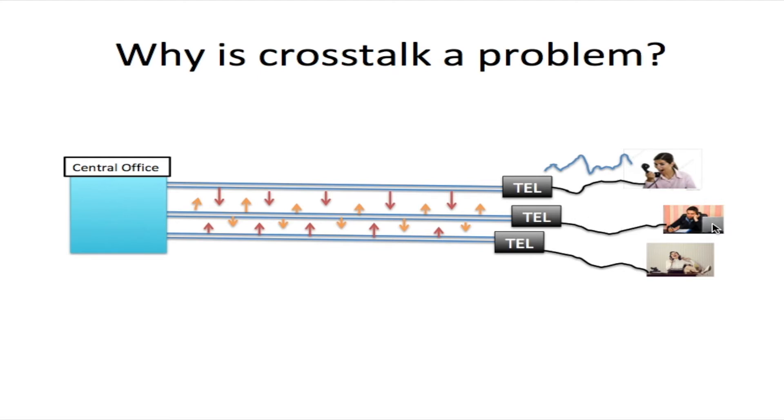This person here will be able to hear this person speak. The louder they speak, the louder the crosstalk gets. If this person at the bottom is speaking as well and they're speaking loud, they will be able to hear them. Or if this person is speaking loud, the person at the bottom would be able to hear them. So crosstalk is constantly crossing over from line to line as a result of electromagnetic induction.